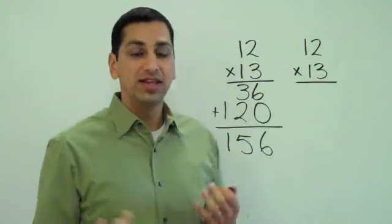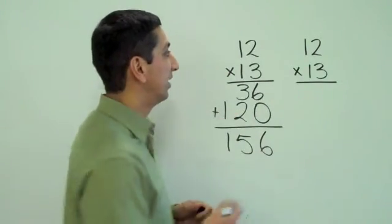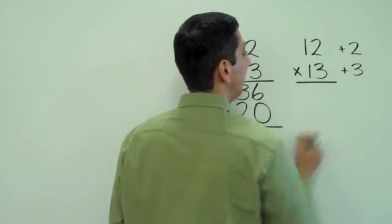There's the problem again. Now these numbers are both near 10, so we're going to use that to our advantage. We're going to say, how far are these numbers from 10? Well, 12 is 2 more than 10, and 13 is 3 more than 10. That was easy.